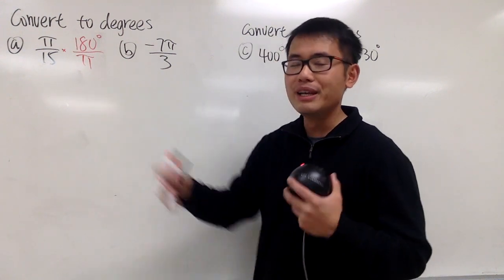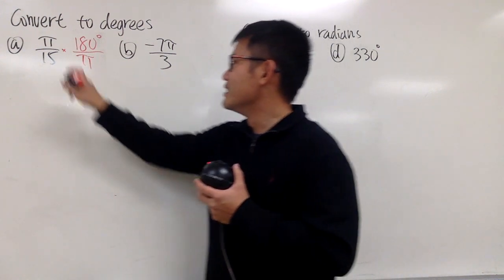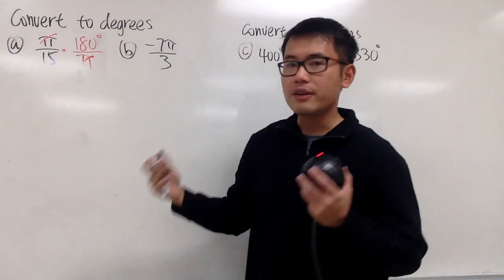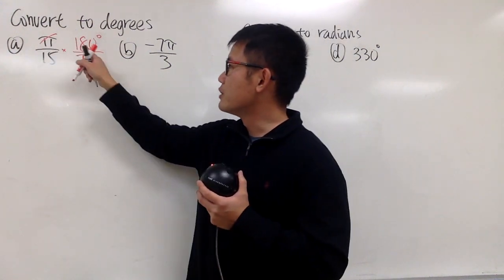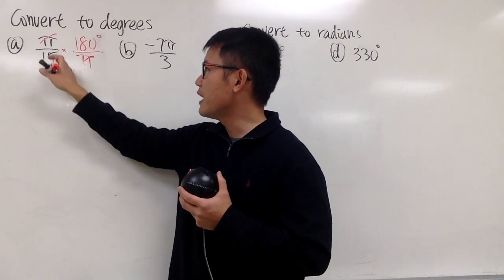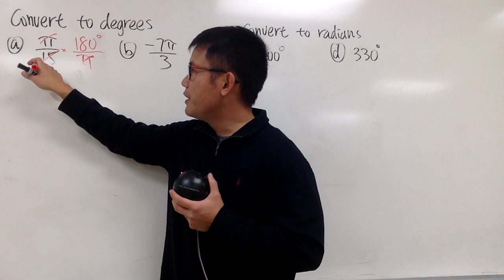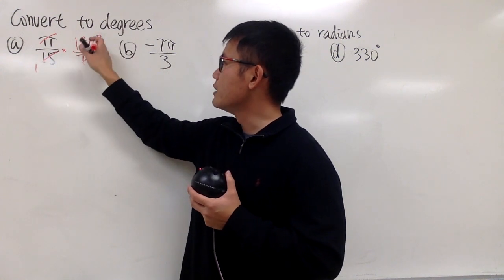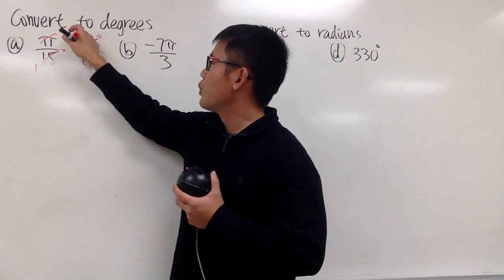And then once you know what to multiply, you can just cancel things out. So you see the π cancel each other nicely. And now we can just do 180 divided by 15. Another way to look at this is, you can say 15 goes into 15 one time, and 15 goes into 180 12 times.